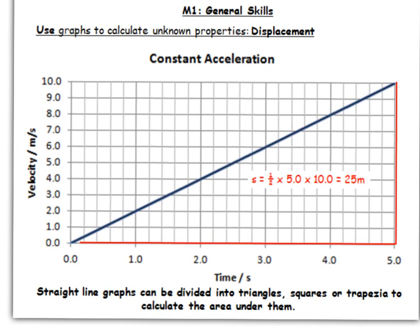Well, graphically, the product of the two variables is the area under the graph. So if we want the displacement from a velocity time graph, we need to calculate the area under it. And again, we have a simpler example here.